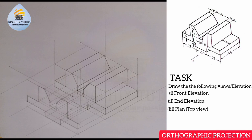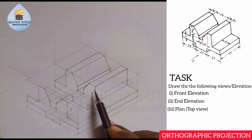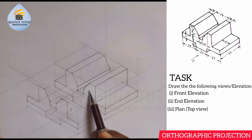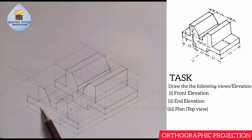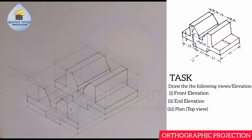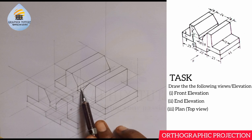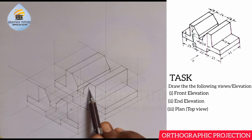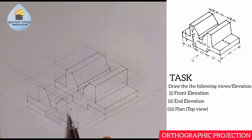We are looking at from this side — this is what you are going to see. That's what will be cast on the mirror, on this plane. Looking at this plane, this is one of the dimensional views you will see, which we call the front elevation. This is my front elevation.